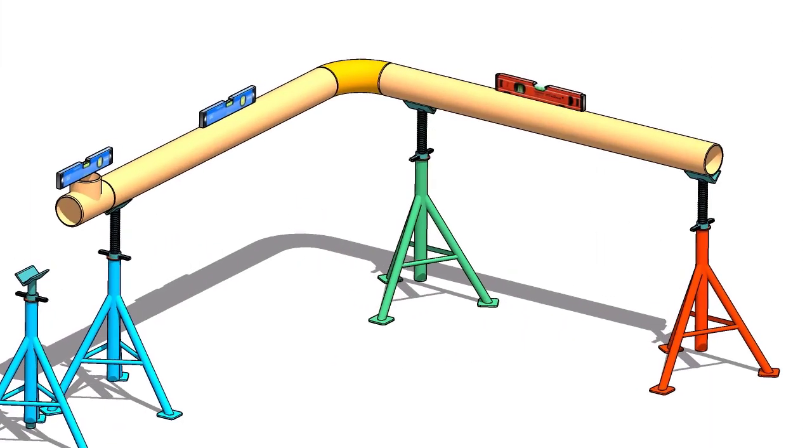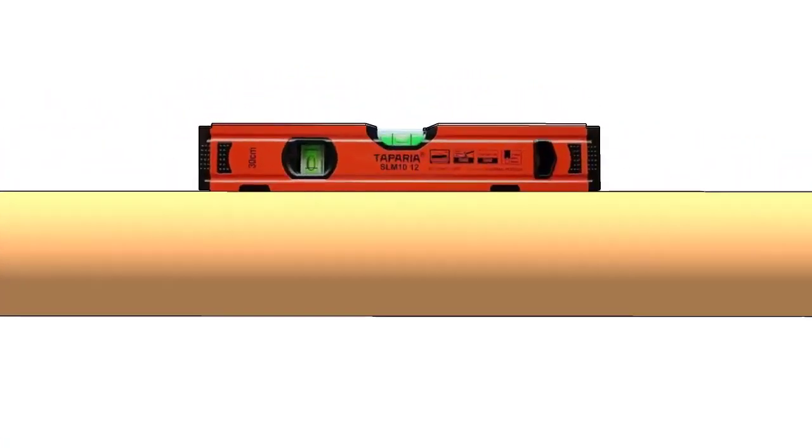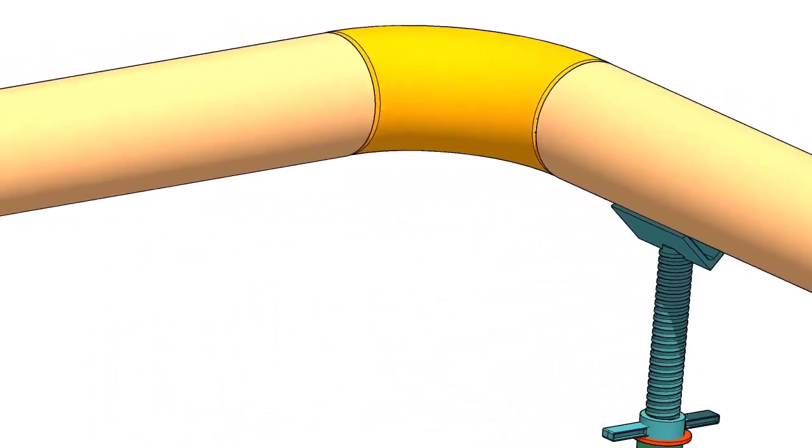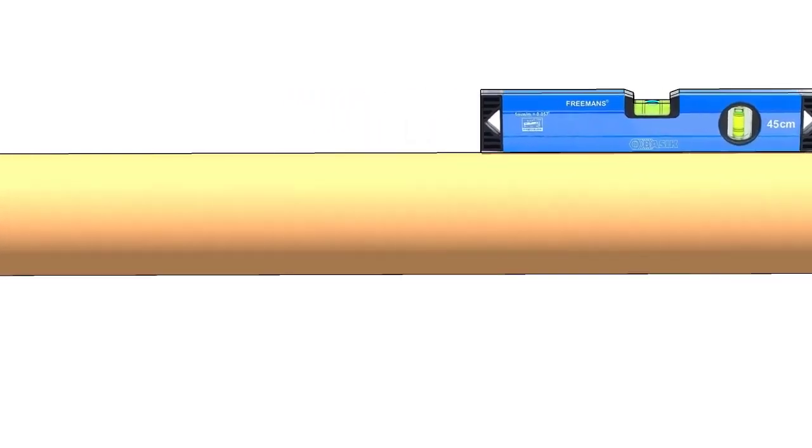First thing to do is to make sure the already fabricated spool's dimension and level are acceptable. Mark the center lines of the tee and the elbow.